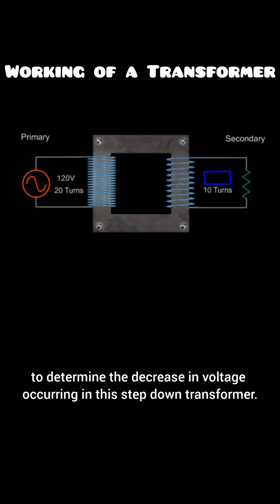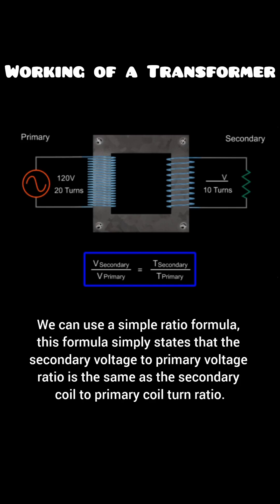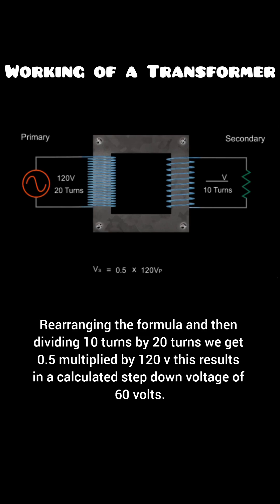To determine the decrease in voltage occurring in this step-down transformer, we can use a simple ratio formula. This formula simply states that the secondary voltage to primary voltage ratio is the same as the secondary coil to primary coil turn ratio. Rearranging the formula and then dividing 10 turns by 20 turns, we get 0.5 multiplied by 120 volts. This results in a calculated step-down voltage of 60 volts.